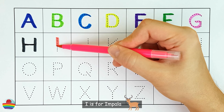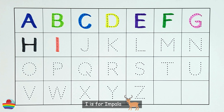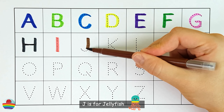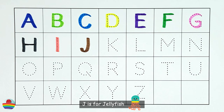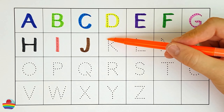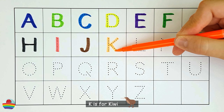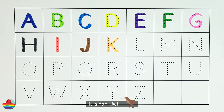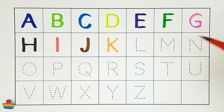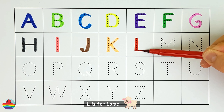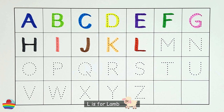I. I is for impala. J. J is for jellyfish. K. K is for kiwi. L. L is for lamb.